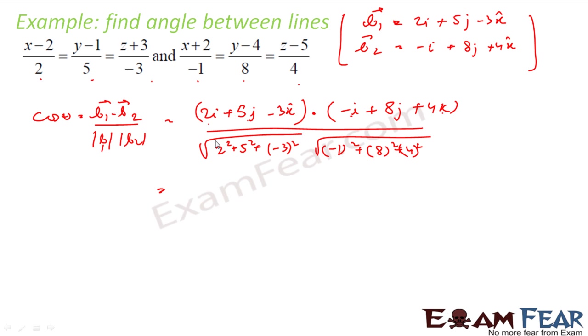So if you solve this, 2 into minus 1 is minus 2, plus 5 into 8 is 40, and minus 3 into 4 is minus 12. By 2 square is 4 plus 25 plus 9. This becomes 1 plus 64 plus 16.